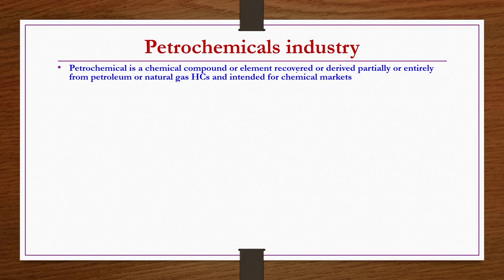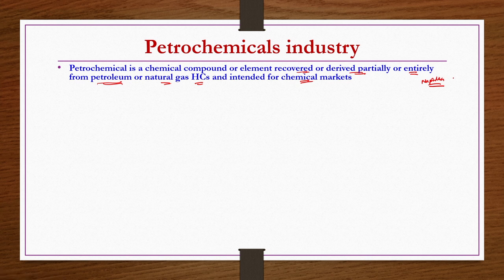A petrochemical is a compound or element recovered or derived partially or entirely from petroleum or natural gas hydrocarbons and intended for chemical marketing. For example, naphtha is available as a natural resource, and by doing different types of processes on it you get different chemicals. Such chemicals are known as petrochemicals because their source is basic petroleum crude or natural gas hydrocarbons, and they are primarily produced for the chemical market.